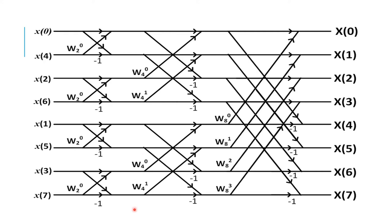All twiddle factors are now filled as W8 to the power of 0 through 3. The input values from the problem are filled in bit reversed order accordingly. For example, x(0) is equal to 0.707 and x(4) is equal to minus 0.707. The values given in the problem are placed according to the bit reversed order.